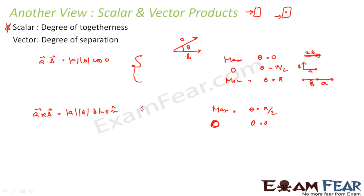So what you see here is you can say that vector product is degree of separation. If they are separated you get good value. If they are together, you have a and b in the same direction, you get 0. If they are separated you get more value.